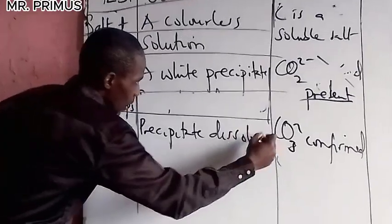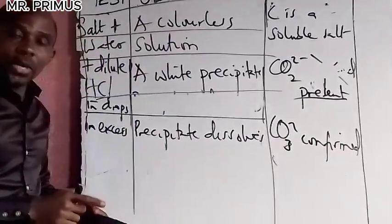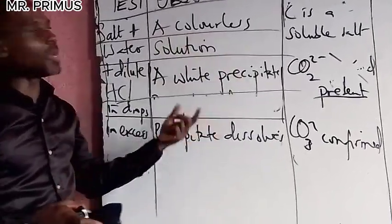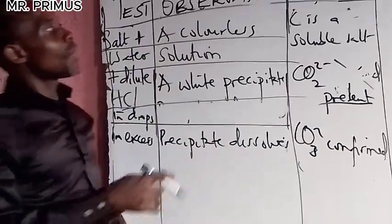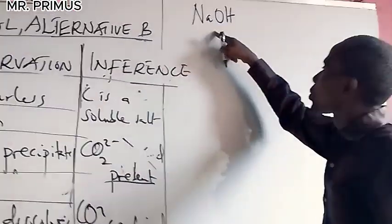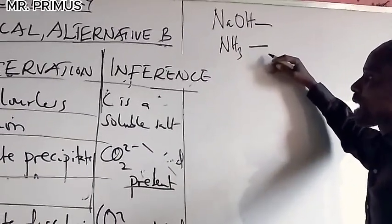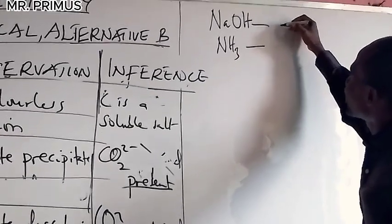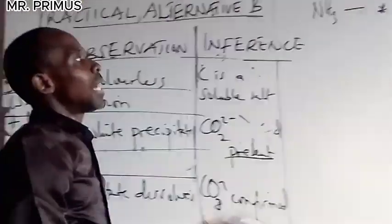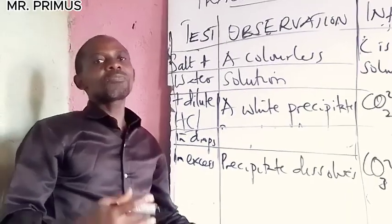In qualitative analysis, 'precipitate dissolves' must be placed in its correct row, and your inference must also align with that. Also, many students find it difficult to differentiate between sodium hydroxide and ammonia solution — these two do not do the same thing. Students keep writing the same inference for both, and this is wrong.